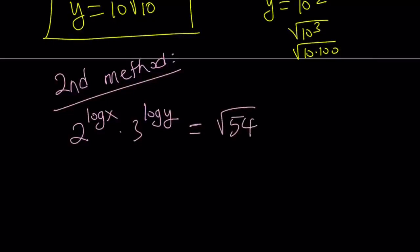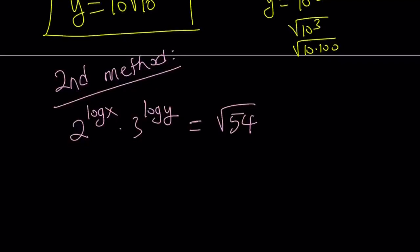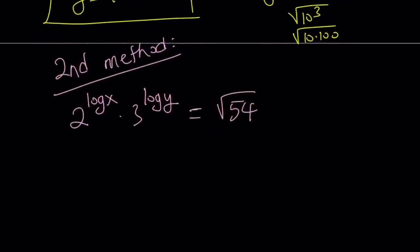So now, I want to break down the 54 into two factors such that, even though we have a radical, I want to break it down into two factors such that one of the factors is a power of 2, and the other one is a power of 3. And this can be done because 54 is 2 times 27.